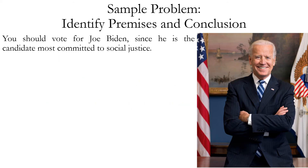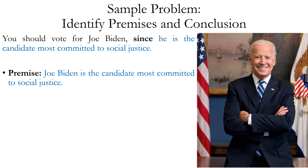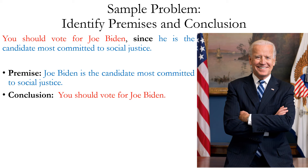Let's look at another sample problem. 'You should vote for Joe Biden since he is the candidate most committed to social justice.' The word 'since' indicates a premise, so 'Joe Biden is the candidate most committed to social justice' is the premise. Note that the pronoun 'he' has been replaced with 'Joe Biden' for clarity. The conclusion is the first clause: 'You should vote for Joe Biden.' This illustrates that premise and conclusion can be combined into one grammatical sentence and still count as an argument.